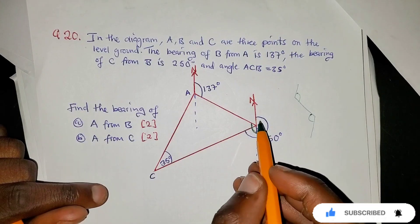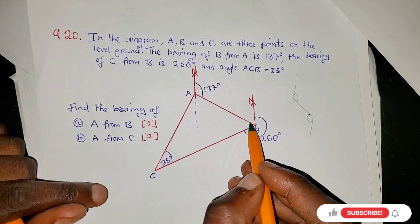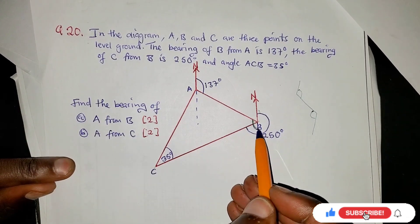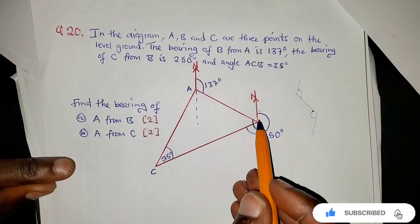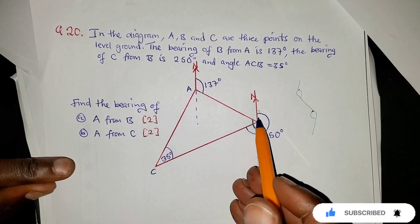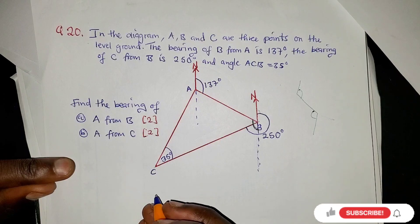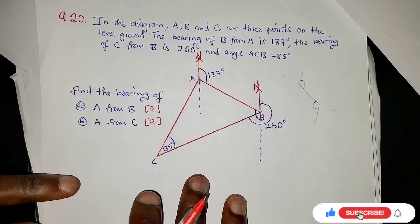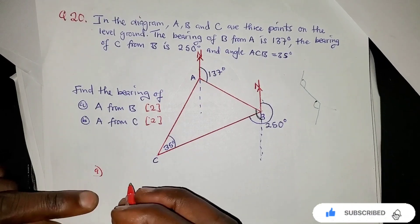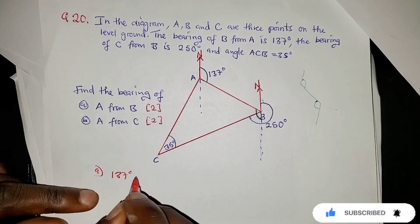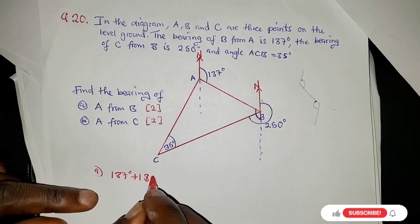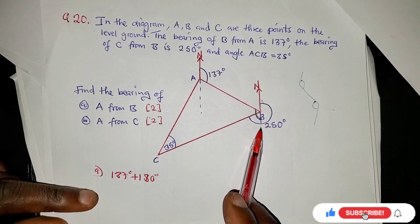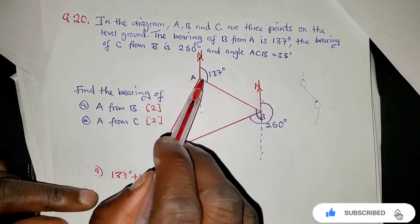Let's first focus on what we need. Since we extended the line, that straight line gives us 180°. So to find the bearing of A from B, we can add 137° plus 180°, where the 137° comes from the alternate angle we identified.